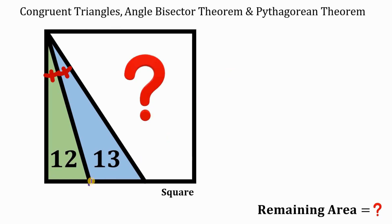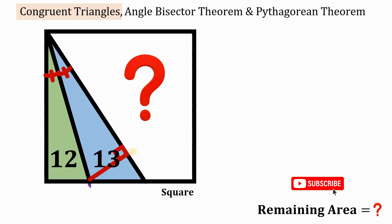From this point, let's drop a perpendicular line to the other segment. We do this because we will use congruent triangles. We have the same angle and two right triangles, therefore these two triangles are congruent. This allows us to split the area of 13 square units into 12 square units and 1 square unit.